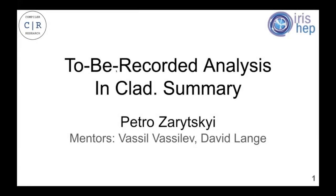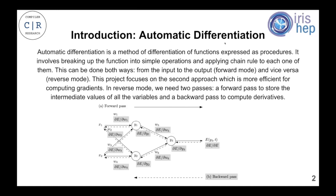My project was about implementing TBR analysis in Clad. My mentors were Vasil Vasilov and David Lach. I'd like to start with a bit of introduction about what automatic differentiation is. Automatic differentiation is a method of differentiating functions expressed as procedures — in our context, those will be functions expressed as code in C++. The basic idea comes down to breaking up the function into elementary operations like multiplication and addition, and differentiating all of them by standard calculus tools like the chain rule.